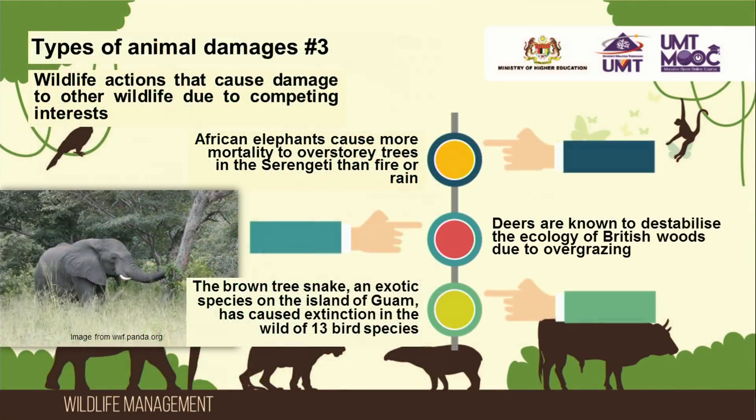Other types of damages are those caused by the natural behaviour of certain wildlife. This could have bad consequences to other wildlife or wildlife-related concerns, which is categorised as type 3 damages. For example, herbivores can destabilise the ecology of important habitats due to overgrazing, while predator species can simply wipe out prey species.